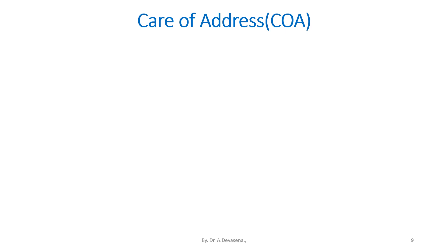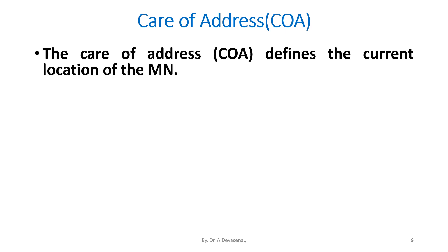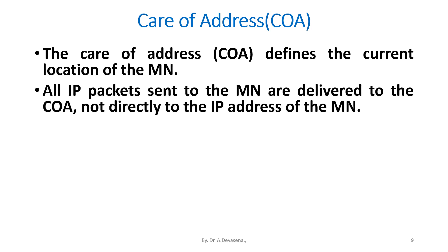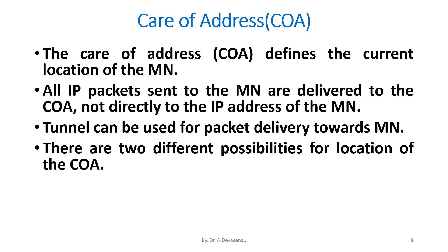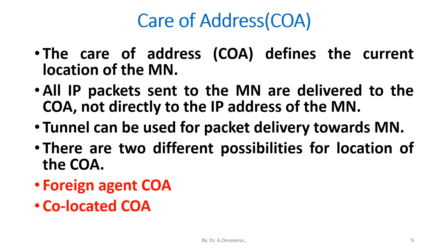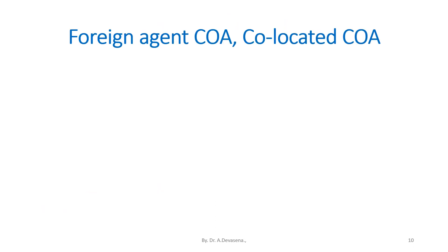Care of address (COA): The COA defines the current location of the mobile node MN. All IP packets sent to the MN are delivered to the COA, not directly to the IP address of the MN. A tunnel can be used for packet delivery towards MN. There are two different possibilities for the location of COA: foreign agent COA and co-located COA.